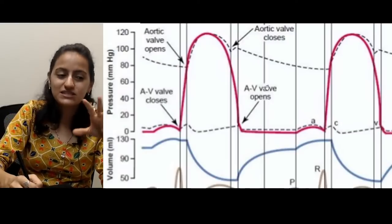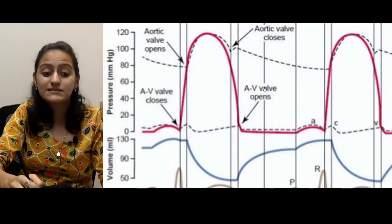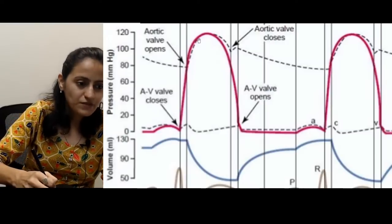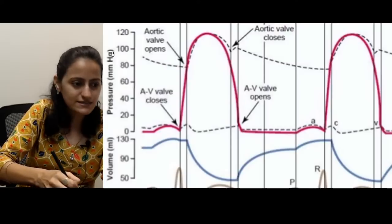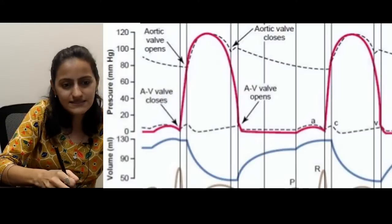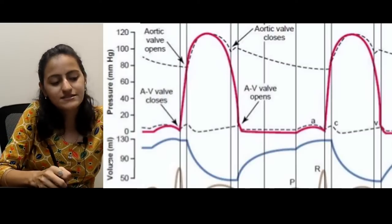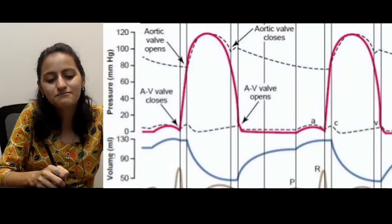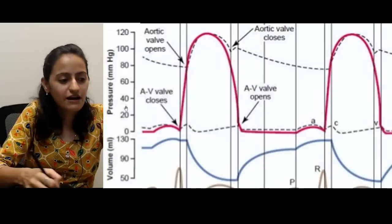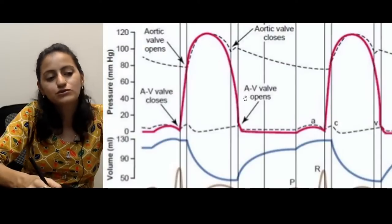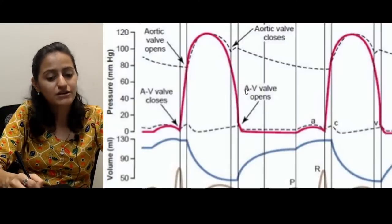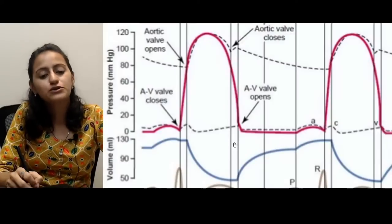Graph-based questions are very conceptual. If the labels are present, it already tells you which axis is pressure and which is volume. Now if the examiner removes those labels — the uppermost graph, which always remains high between 120 and 80 mmHg without going down significantly, is the aortic pressure. The graph that reaches up to aortic pressure but then comes down significantly (almost to zero during relaxation) is the left ventricular pressure. The lowermost graph with pressures below 20 is the left atrial pressure — because the atrium is a low-pressure chamber.